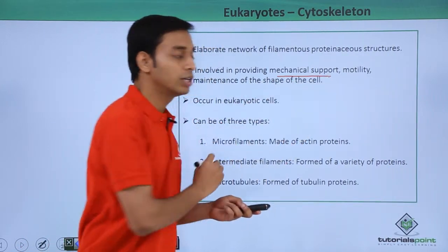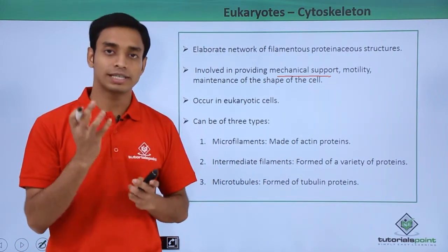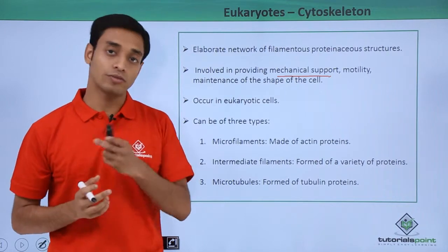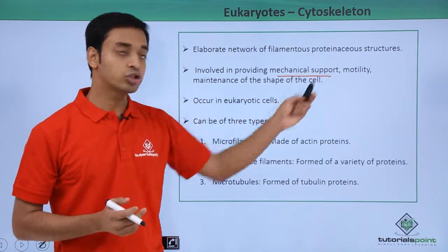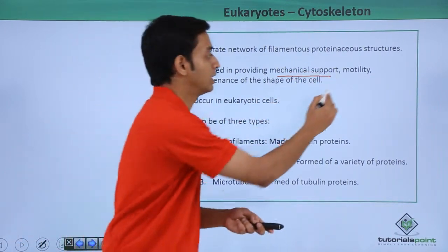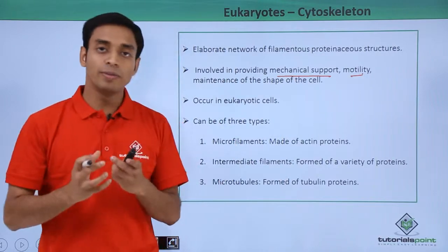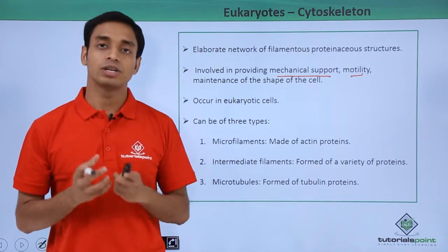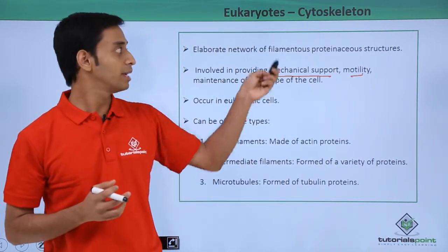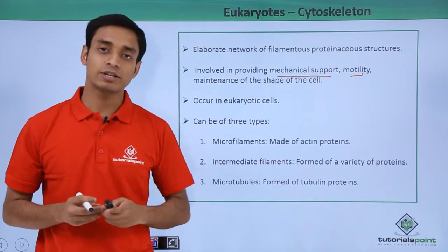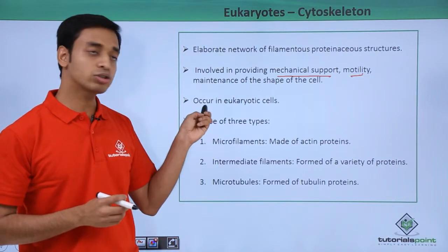These are the structures which are actually involved in providing mechanical support. They provide proper shape to the cellular structures, and for eukaryotic cells they also help in motility, that is movement. So movement, shape, and mechanical support are important functions played by the cytoskeleton.